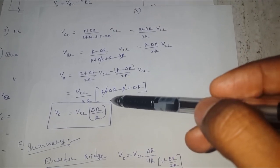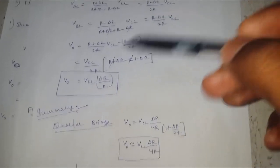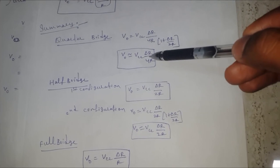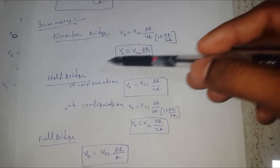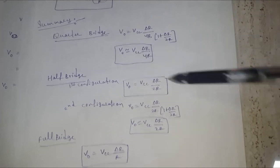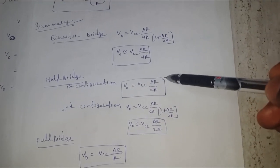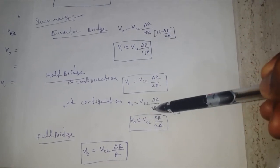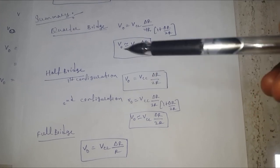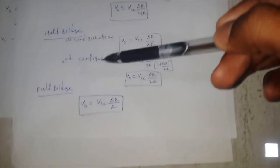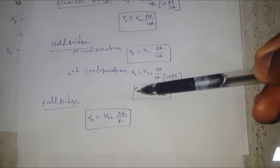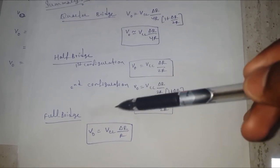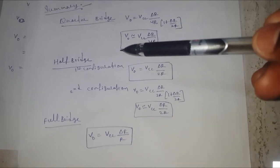In summary: for the quarter bridge, V_out = VCC × ΔR / 4R; for both half bridge configurations, V_out = VCC × ΔR / 2R; and for the full bridge, V_out = VCC × ΔR / R. Compared to the quarter bridge, the half bridge has higher output voltage and thus higher sensitivity. The full bridge has the highest sensitivity of all three configurations. Thank you for watching.